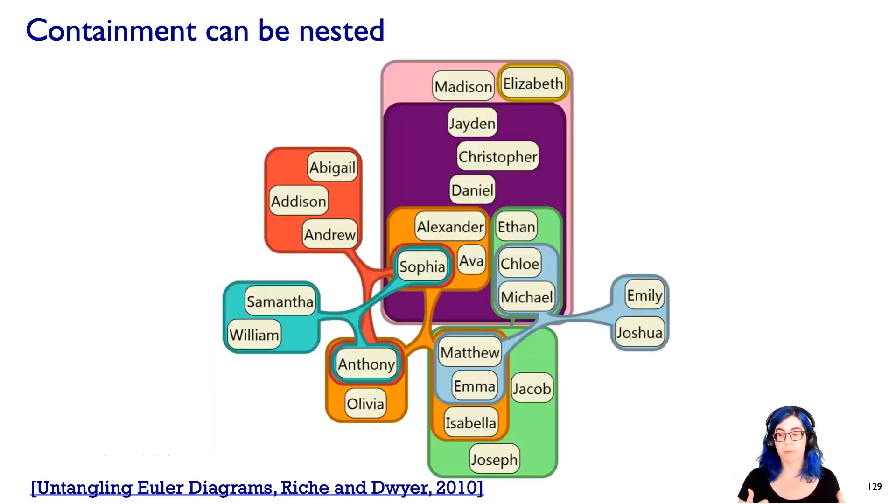I'll mention, because it might not be obvious, that you can get nesting with containment. One thing you can do with containment is you can show hierarchical structure, not just of two levels, parent to child, but in fact multiple levels. This Euler diagram approach is one example of doing that.